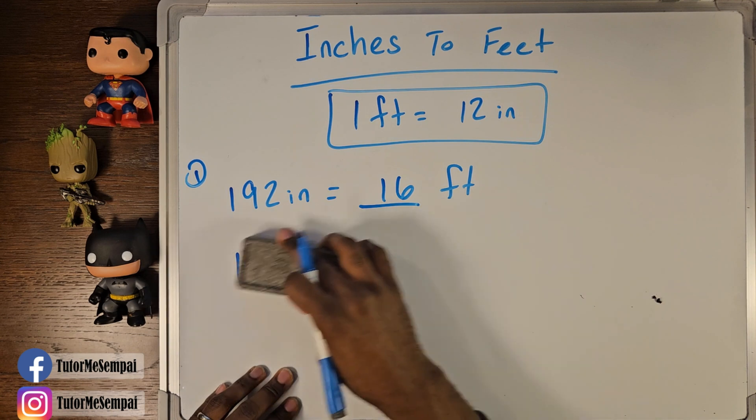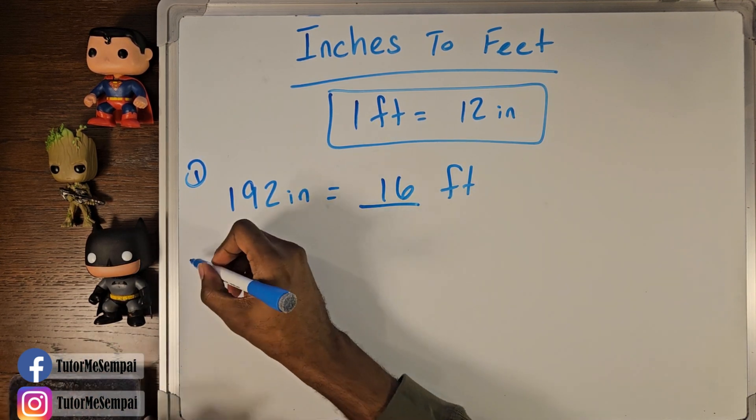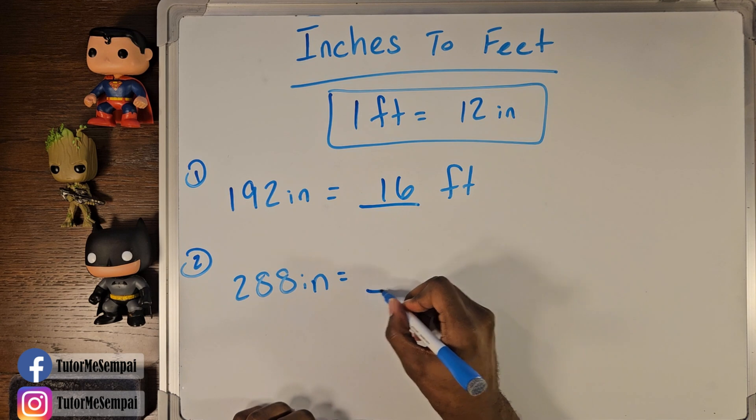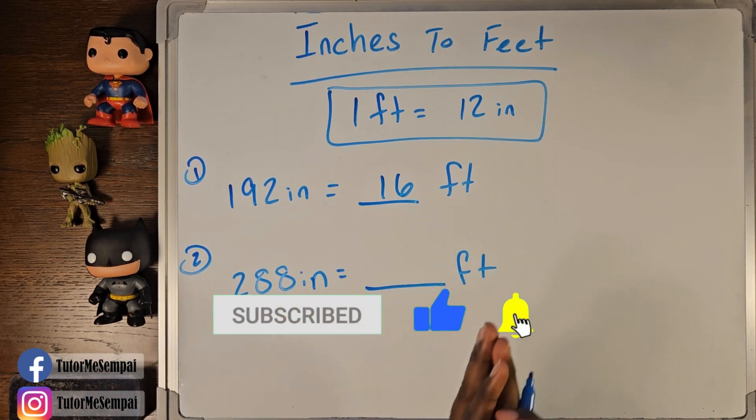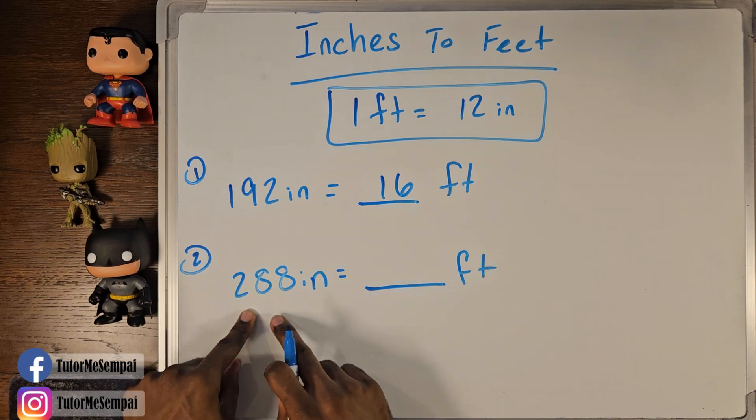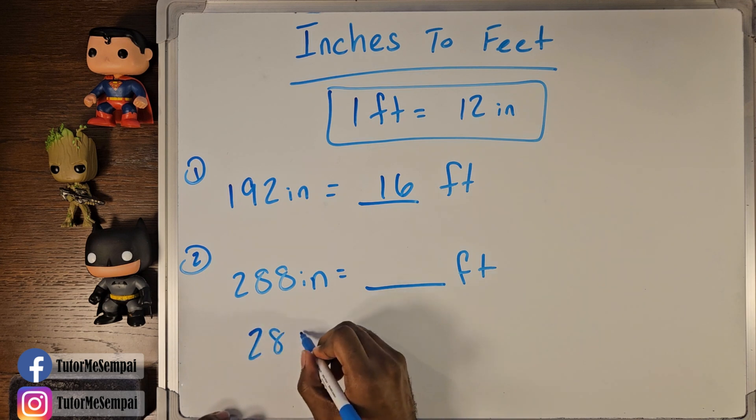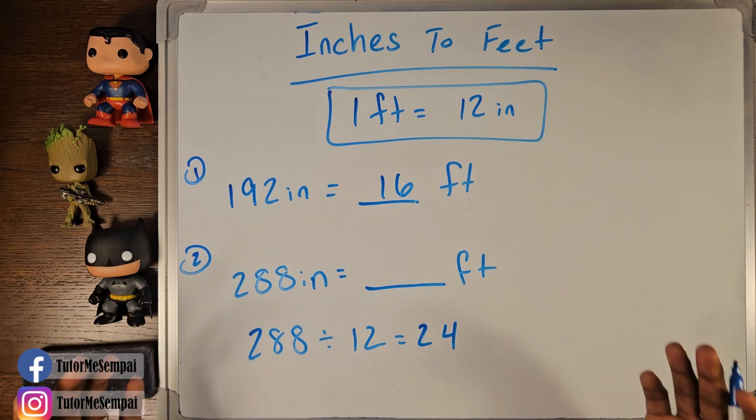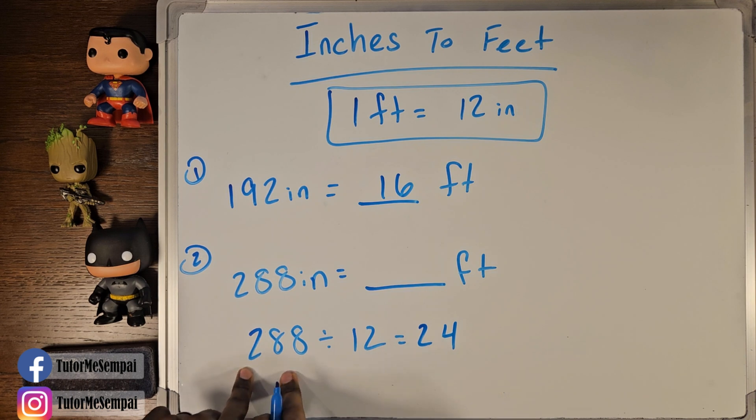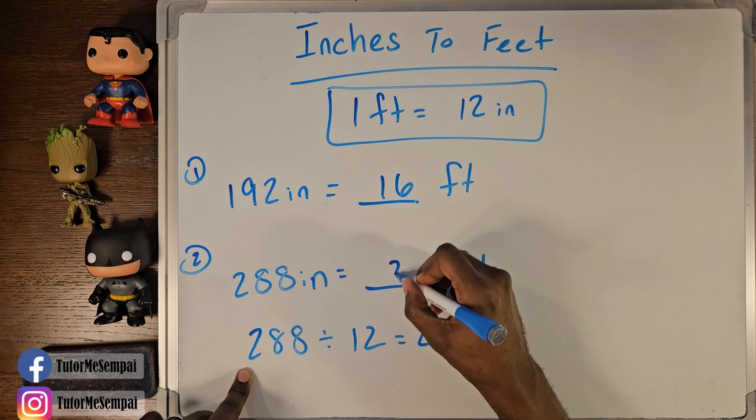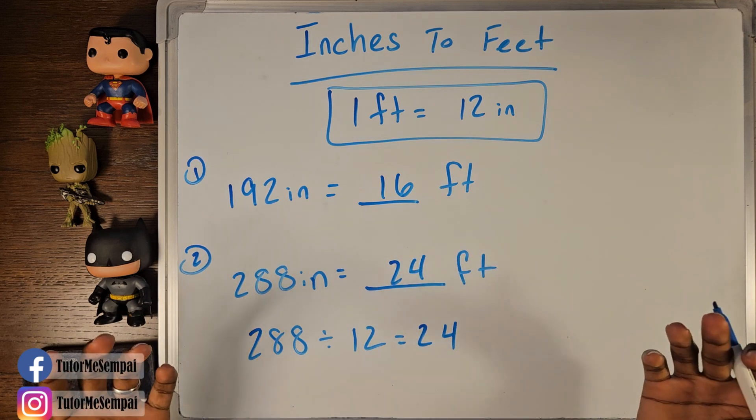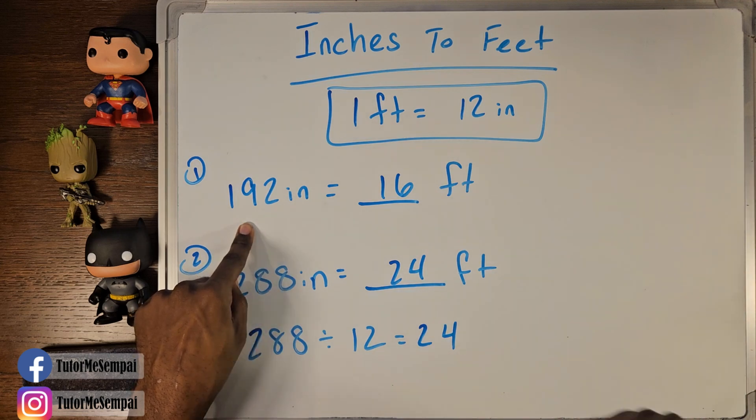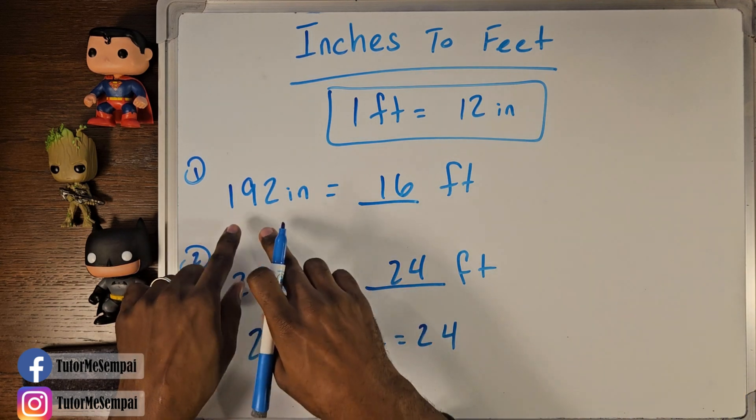So this is good for our first example, but let's say we have another example. And in our second example, we have 288 inches. And we want to figure out how many feet we have here. Well, we're going to tackle this the same exact way. We want to see how many groups of 12 will 288 give us. So we're going to divide 288 by 12 again, and when we do so, we're going to get 24. 24 groups of 12 is what we have when we have 288 inches. Therefore, our answer is going to be 24 feet. So when you're converting from inches to feet, what you really want to do is take your total number of inches and divide it by 12. That's going to give you how many feet you have for your amount of inches.